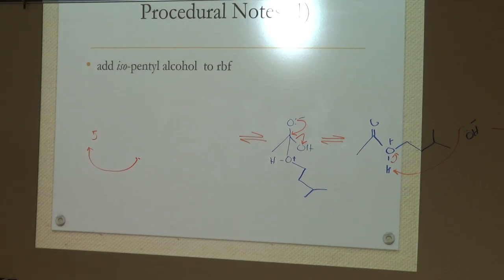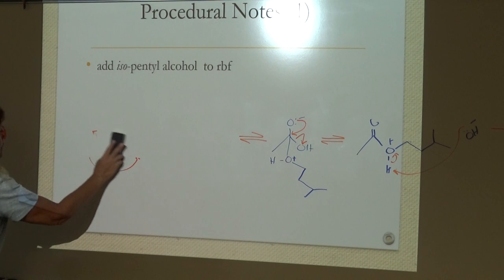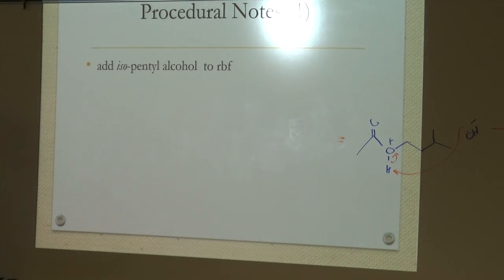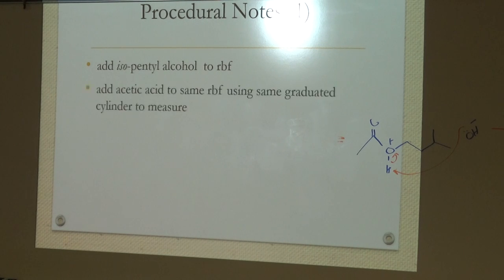Procedural notes. The isopentyl acetate is going to go into our round bottom flask. We're going to add the acetic acid to the same round bottom. We can use the same graduated cylinder to measure without cleaning it.